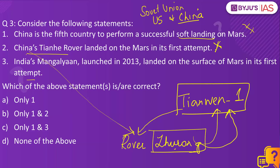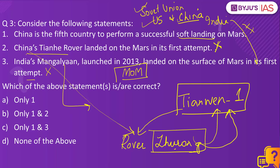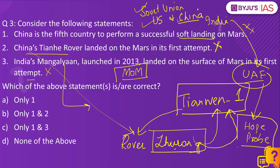India's Mangalyaan, launched in 2013, landed on the surface of Mars in its first attempt — this statement is wrong. Mangalyaan did not land on the surface of Mars; it only entered into orbit around Mars because it was a Mars Orbiter Mission (MOM). Five countries have been able to reach orbit around Mars: Soviet Union, United States, China, India, and UAE. UAE became the first Arab country to enter orbit around Mars, and UAE's Hope Probe also became the second country after India to reach Mars orbit in its first attempt.